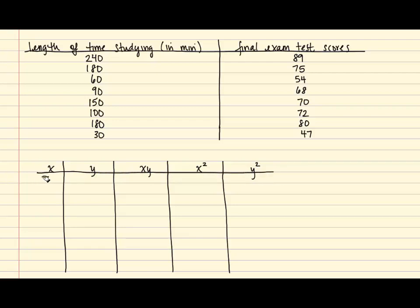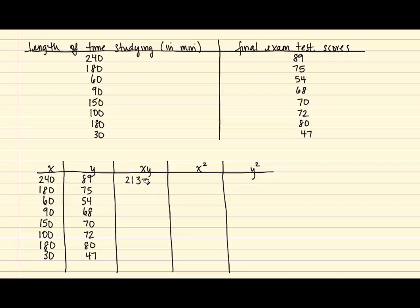First, we're going to document our x values, and then we're going to document the y values. Now we're going to find the xy values, and these values are found by taking x times y. So for the first value, we're going to take 240 times 89, which equals 21,360. Next, we're going to take 180 times 75, and that gives us 13,500. You'll repeat this process until you find all of the remaining products of x and y.